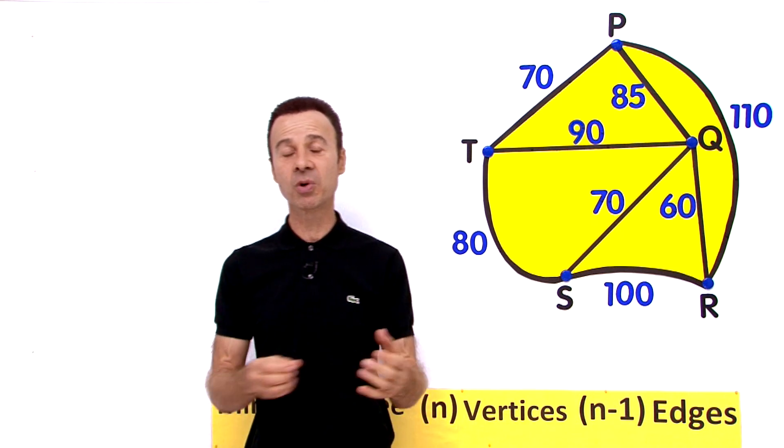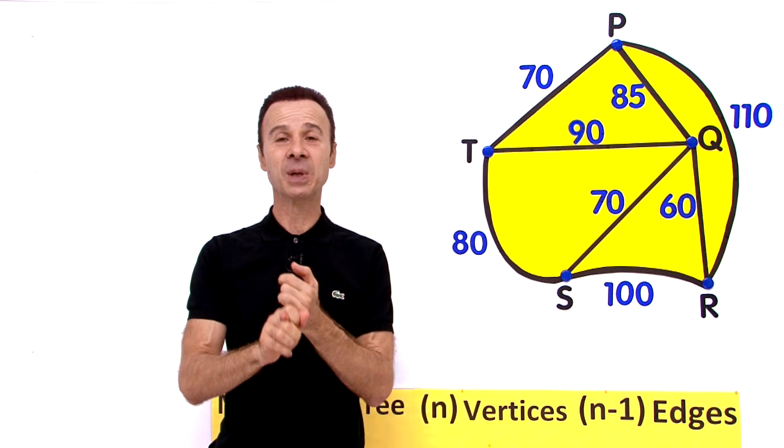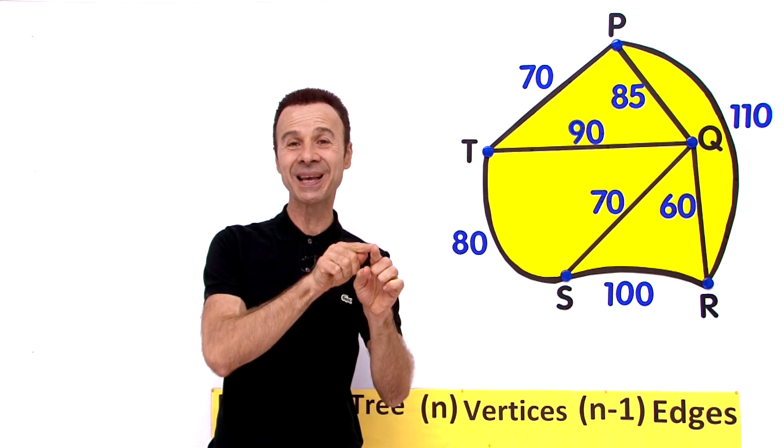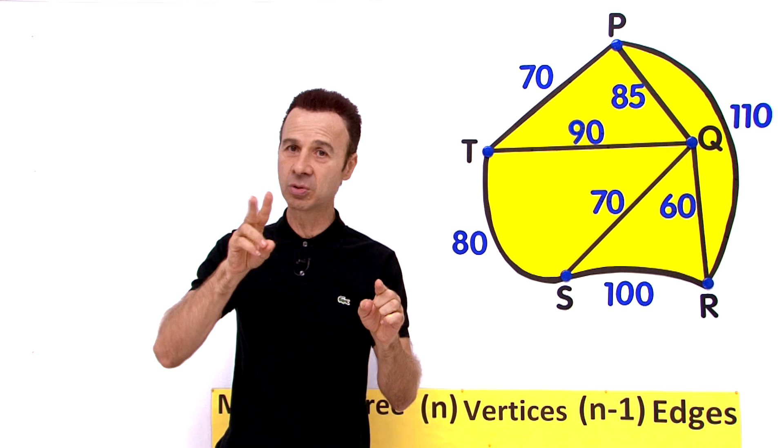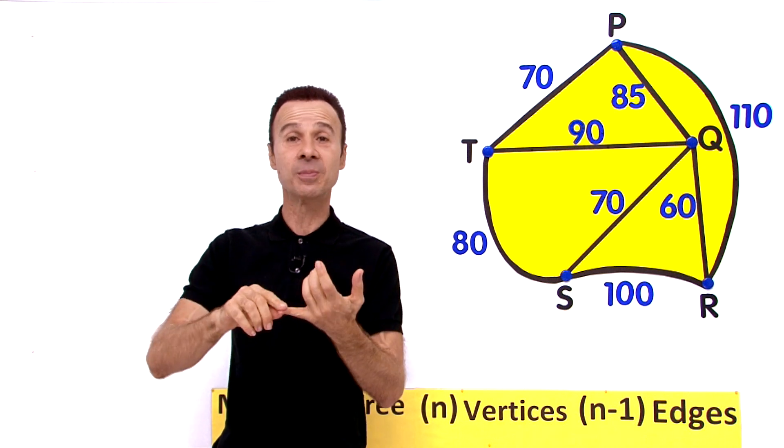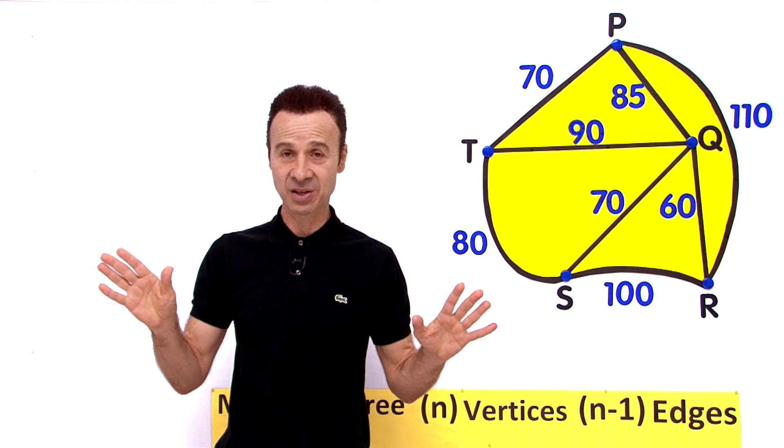Now what is a minimum spanning tree? Well there are three criteria. Number one, between any two vertices there must be exactly one path, not two, not three, exactly one path. If we have more it is going to form a cycle or a loop and that is not acceptable.